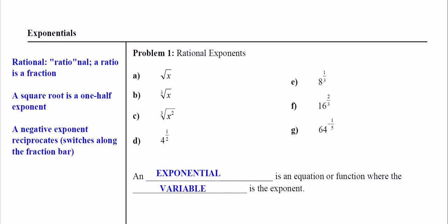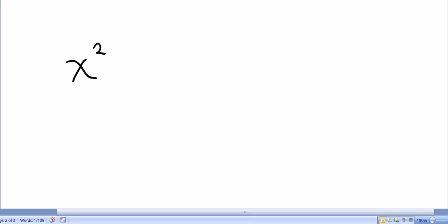We're going to first begin by reviewing a few things from Algebra 1 and Algebra 2 concerning rational exponents. Now a rational exponent is one that forms a ratio, and a ratio is a fraction. So we'll begin with this. We call this x squared, is how we would say it, and it represents x times x.